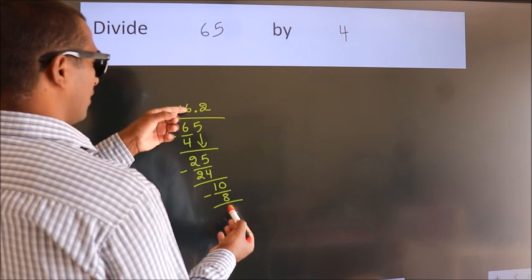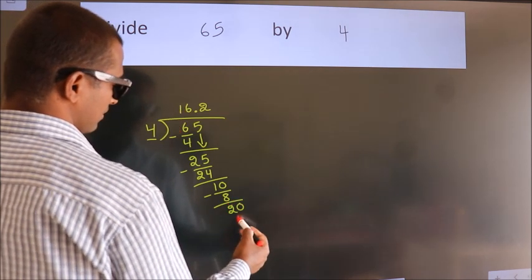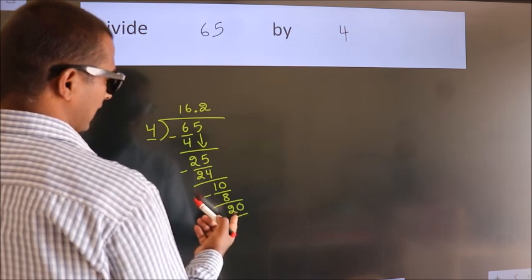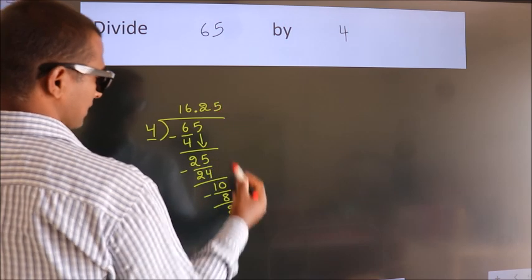After this, we already have the decimal. So directly take 0. So 20. When do we get 20? In 4 table, 4 fives 20.